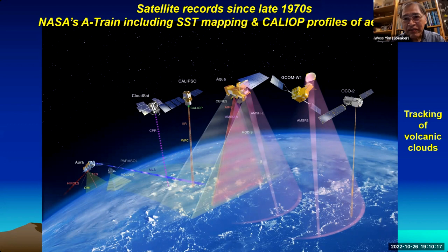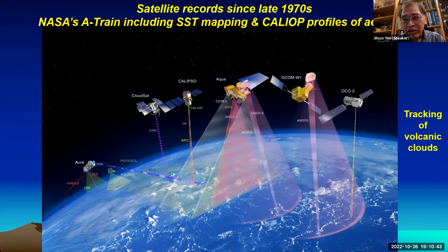Since the late 1970s we are lucky enough to have satellites providing a variety of information, including sea surface temperature mapping. Very useful too are the profiles of aerosols from volcanic eruptions. We are now able to track day-by-day movement of volcanic clouds, and then look at observation records on extreme weather to try to deduce what is really happening.